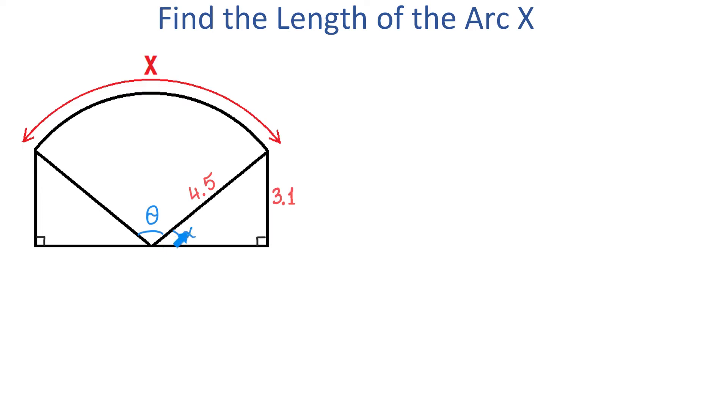Then for angle alpha, this is the opposite side, and this is the hypotenuse. So, to find this angle, we will use the sine function, and we will say that sine of angle alpha equals the opposite side, which is 3.1, divided by hypotenuse, which is 4.5. Then alpha equals sine inverse of 3.1 over 4.5. This is approximately 43.54 degrees.